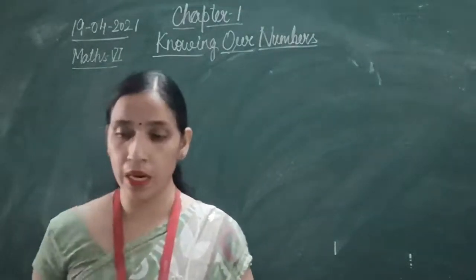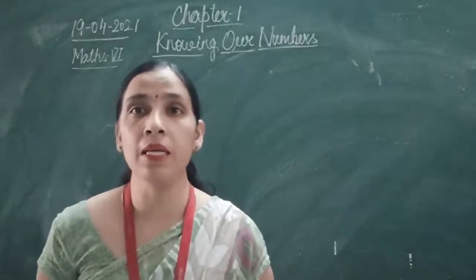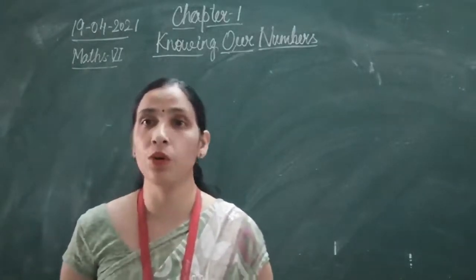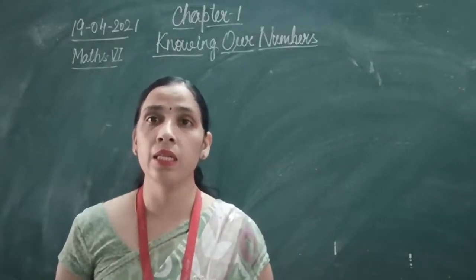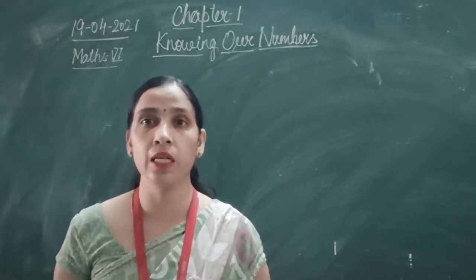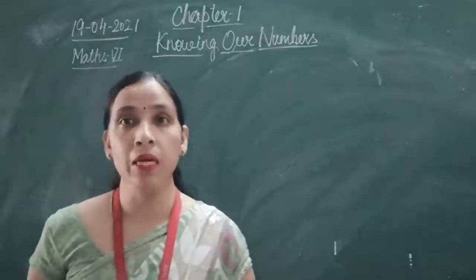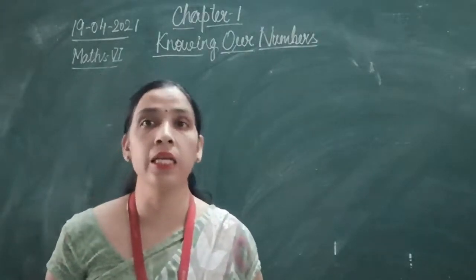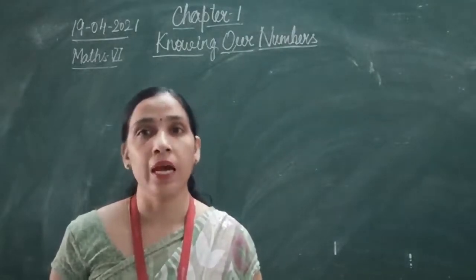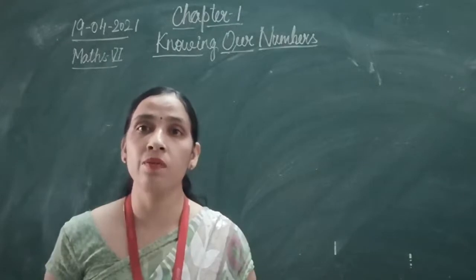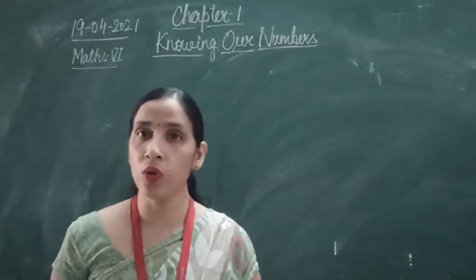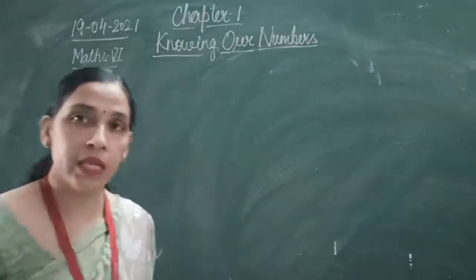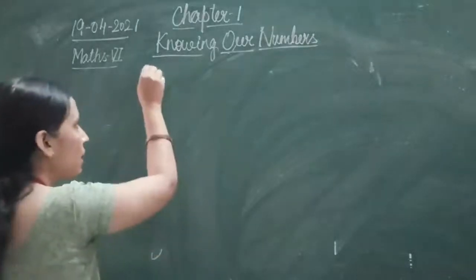How will you expand brackets? How will you do multiplication of two numbers by expanding brackets? We can write a number which is related to 10, 100, or 1000 in the form of addition of 10, 100, and 1000. Now we will take a few examples to understand what we mean by expanding brackets.